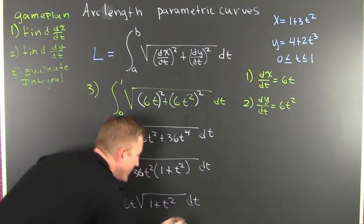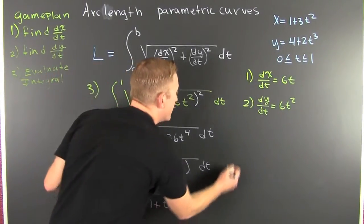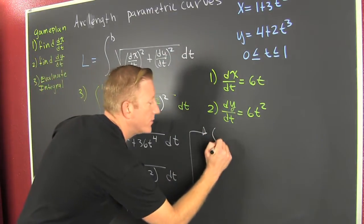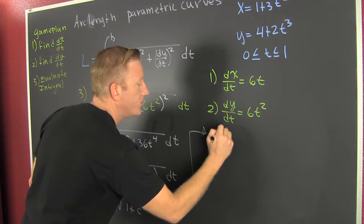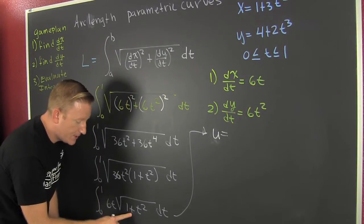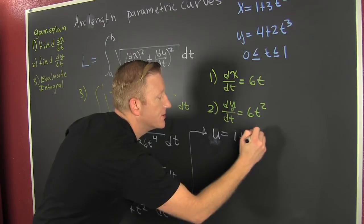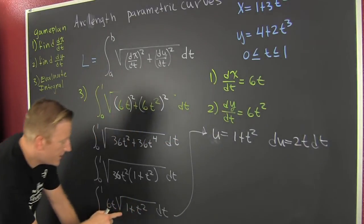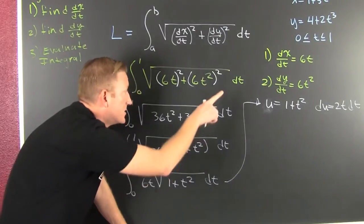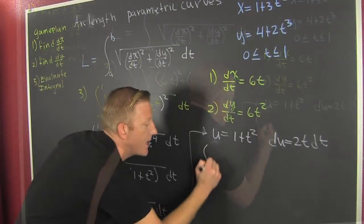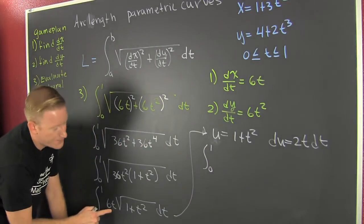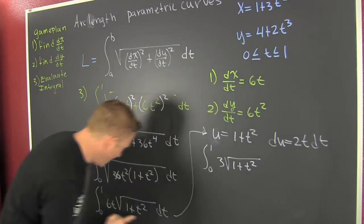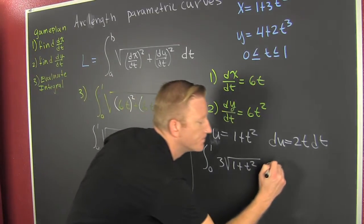You need to go back to your differential calculus and see that this is a u-substitution. Let u equal 1 plus t squared. Then du equals 2t dt. We want to rewrite the integrand so everything comes out nicely. We can write it as 3 times the integral from 0 to 1 of the square root of 1 plus t squared times 2t dt, because now we have our u and our du.